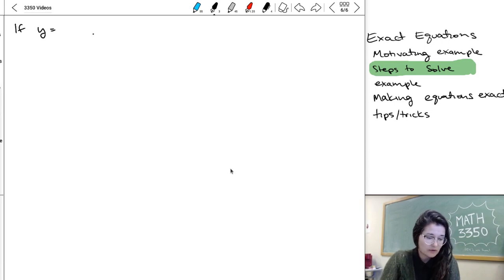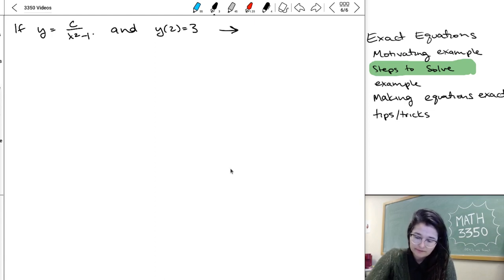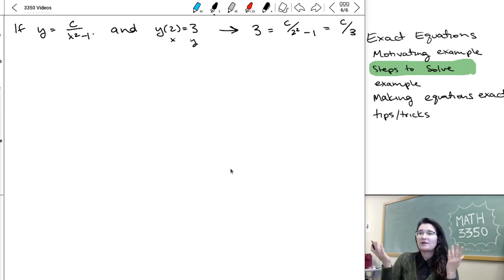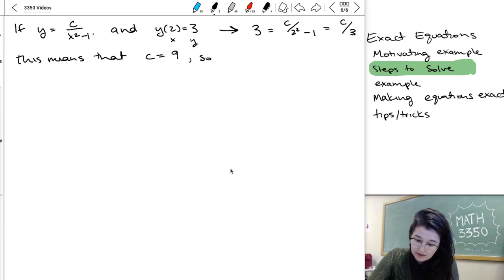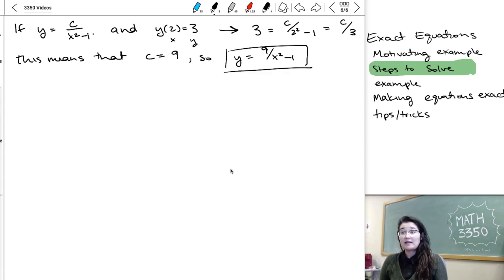So, if y is equal to c over x squared minus 1, and y of 2 is equal to 3, then we know that 3 should be equal to c over x squared minus 1, where x is 2. So my x value is 2, my y value is 3. I went ahead and plugged it all in. Or, 2 squared is 4, so 3 is equal to c over 3. This means that c is equal to 9, so y is equal to 9 over x squared minus 1, and that's going to be the solution to the initial value problem.